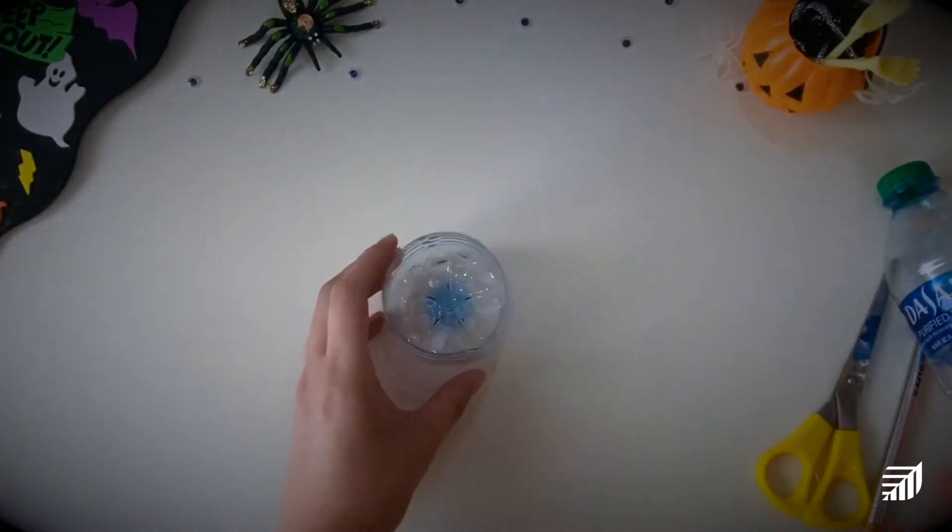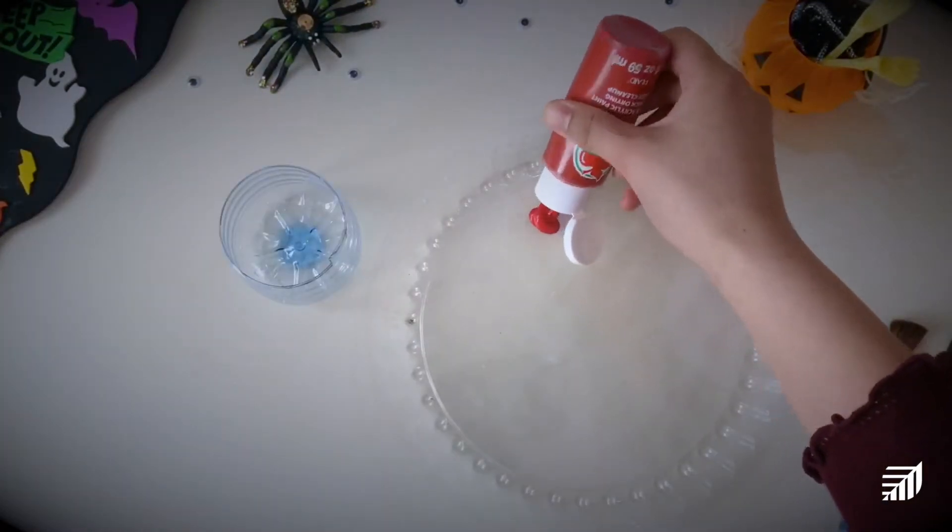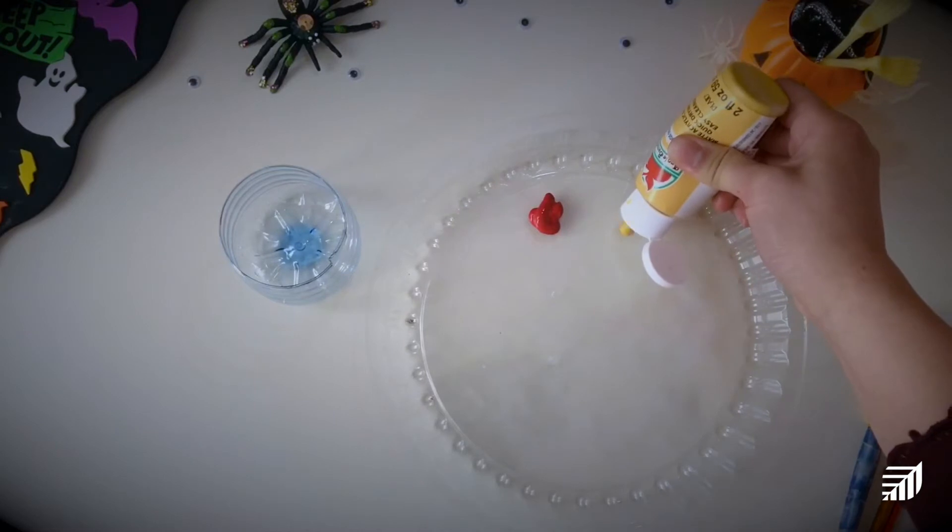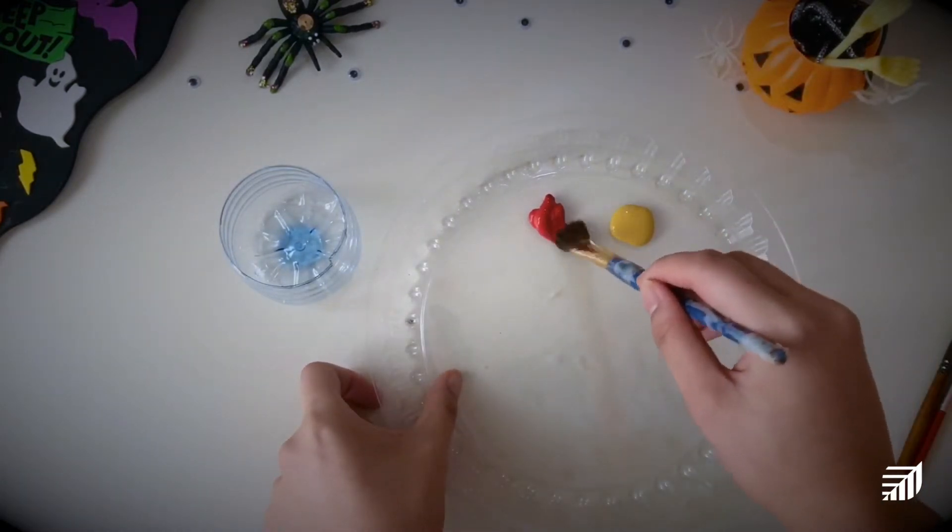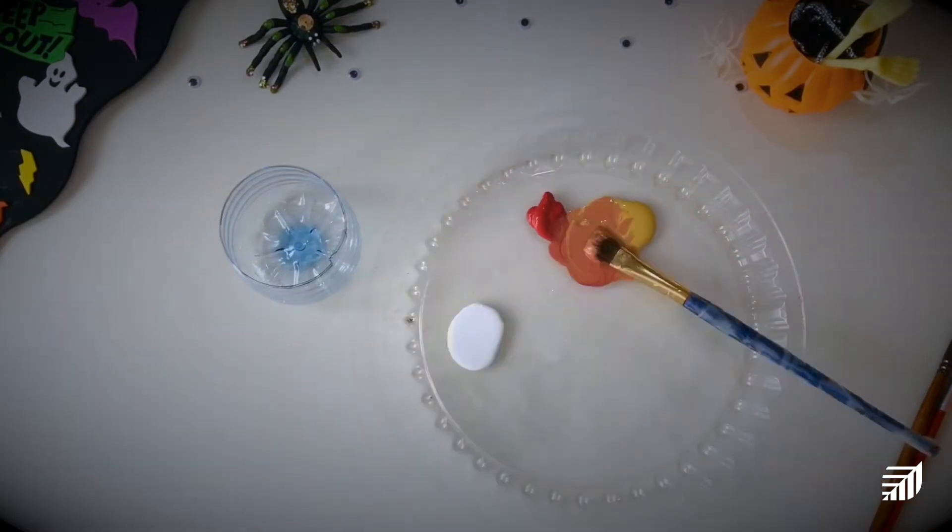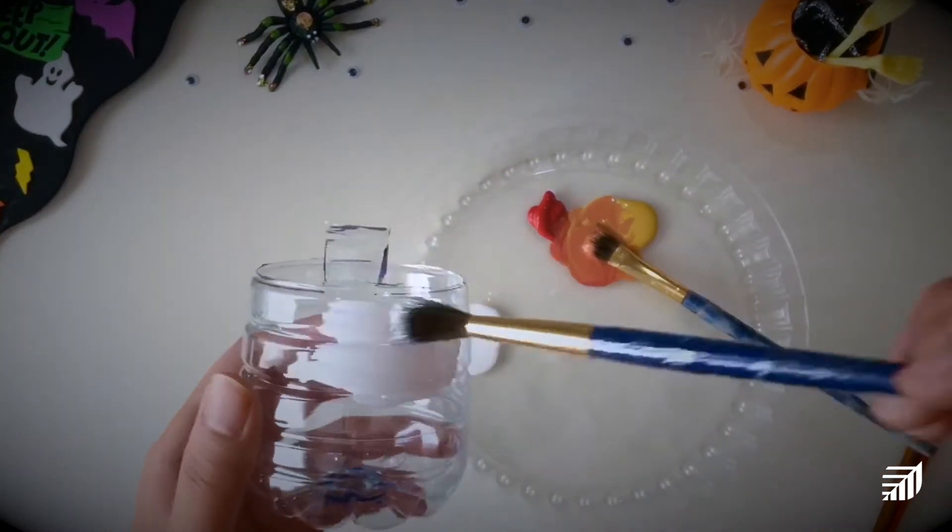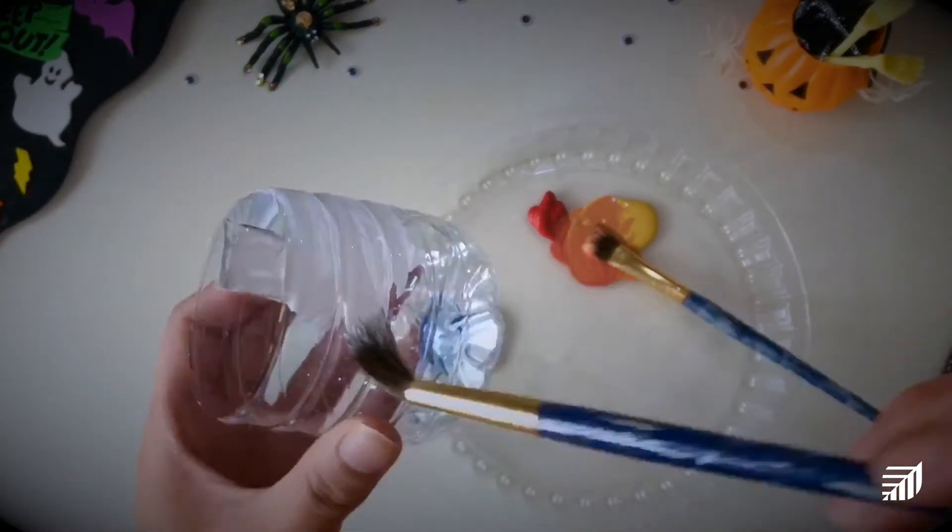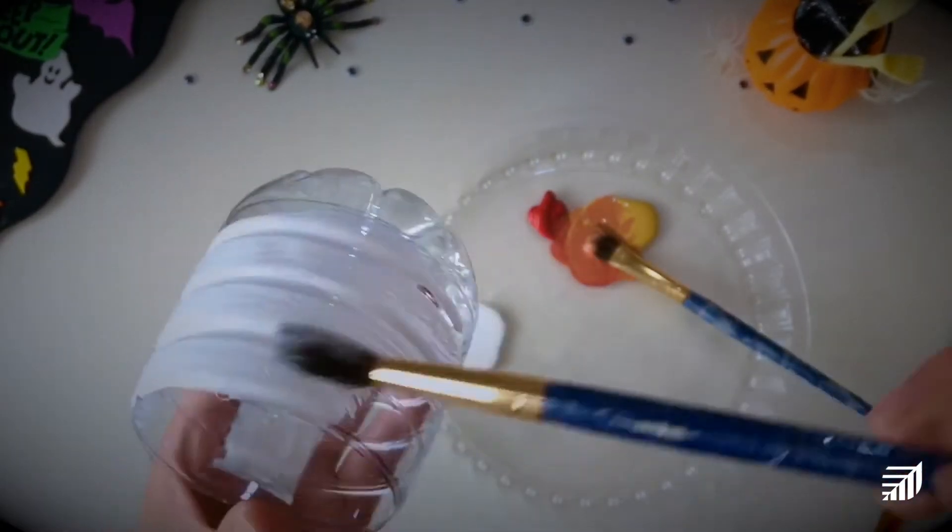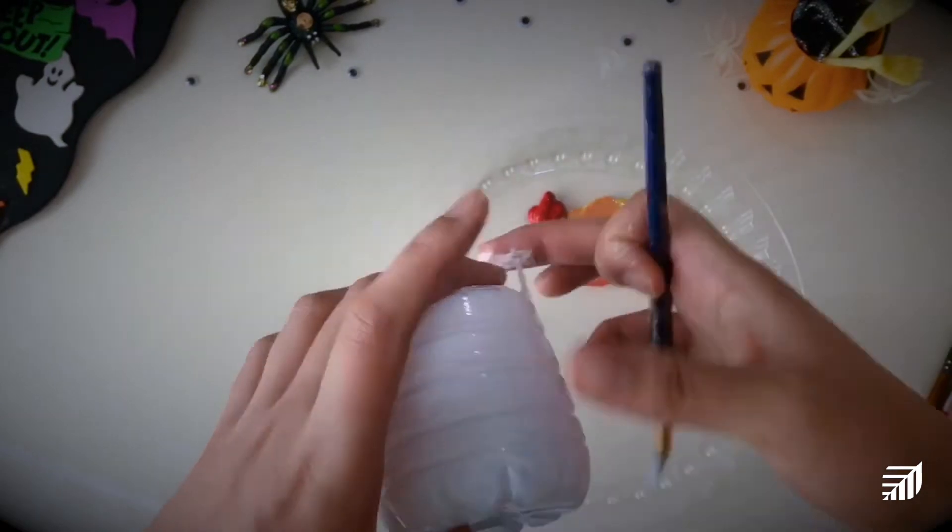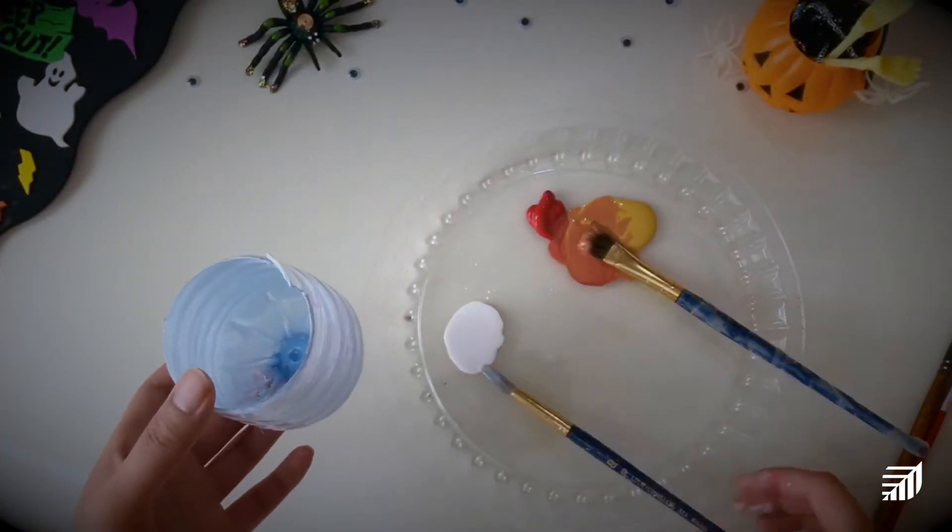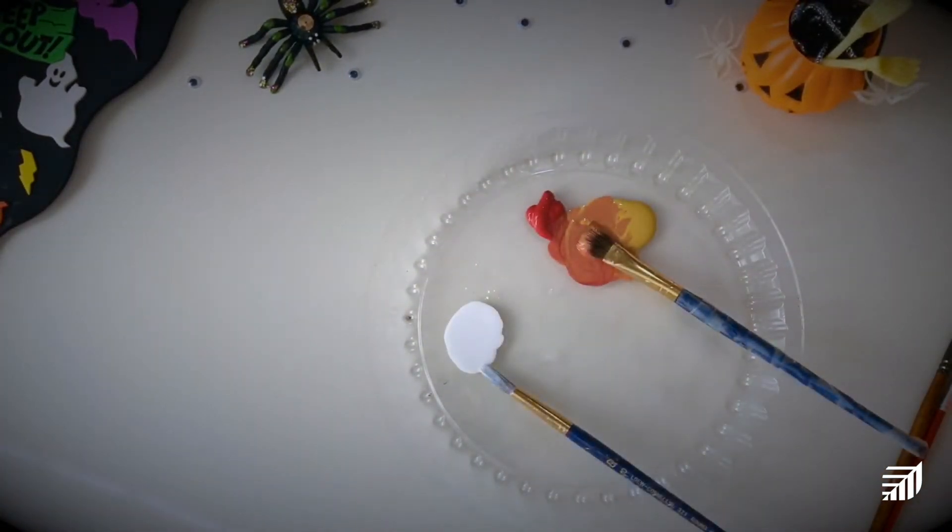Once you have your bottle cut out, it's time to paint. Since I don't have orange paint today, I'm just going to mix my red and yellow acrylics together to make some orange. Before I apply the orange, I'm just going to give my bottle a quick coat of white paint. This helps the orange appear a little bit more vibrant when I apply it later. Once this first coat is applied, I'm just going to let it air dry or you can use a hairdryer to speed up the process.